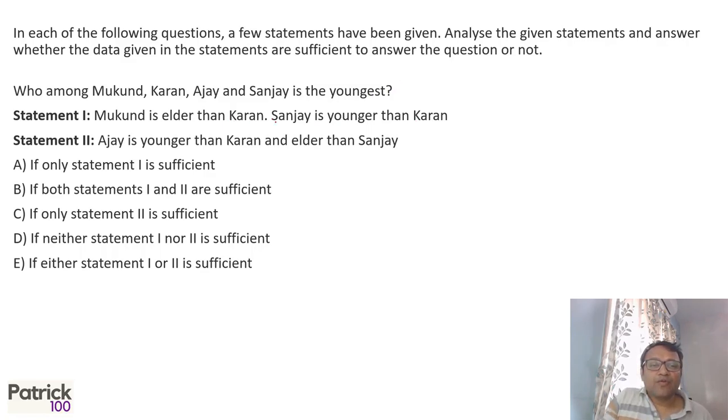Who is the youngest? First statement: Mukund is elder to Karan, and Sanjay is younger to Karan. Second statement: Ajay is younger to Karan and elder to Sanjay. In each statement I'm given only three people, so I can't solve the individual statements.